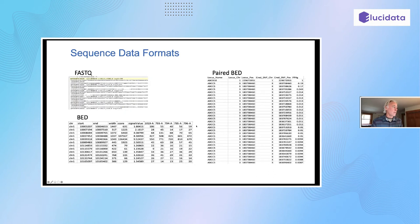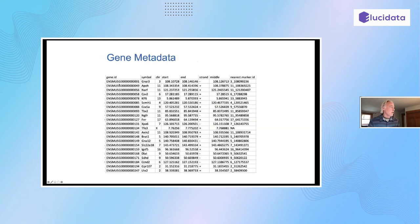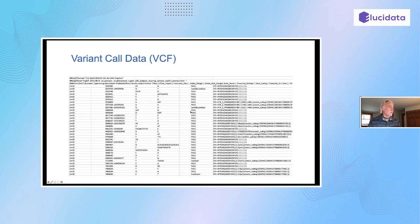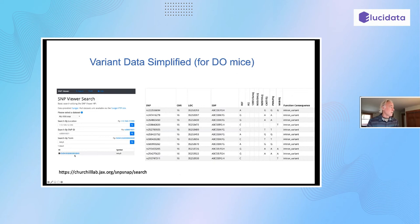The BED file can contain peak width, quality score, signal value, and individual read counts for each sample. There's also a paired BED format helpful for Hi-C analysis, which can link one chromosomal region to another. For gene expression or proteins, we keep gene metadata also in BED format, with key identifiers including the universal unique identifier from Ensembl — which is nice for backward compatibility — and gene symbols for human readability. For variant calls, we extracted all the data for our key strains into a simple format. We have a web tool with a human interface and an API to pull variant calls from this database on the fly.